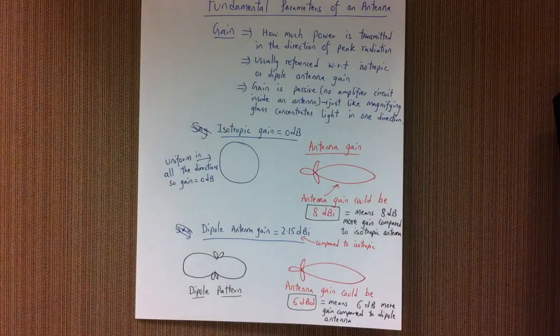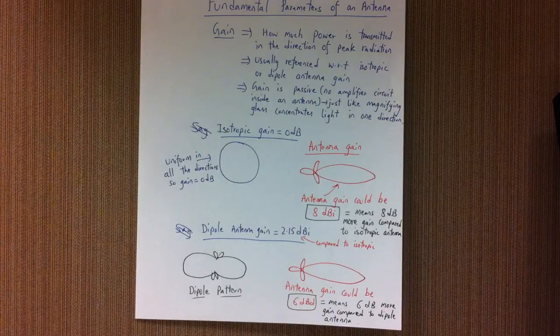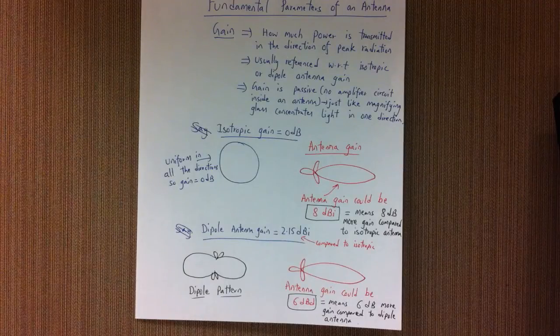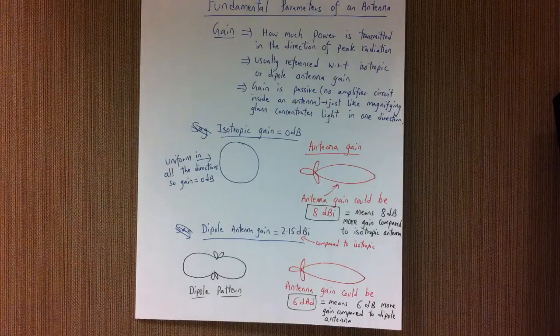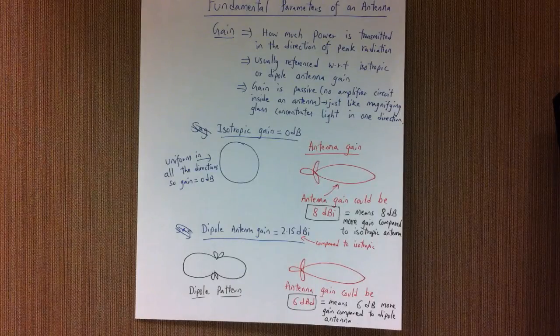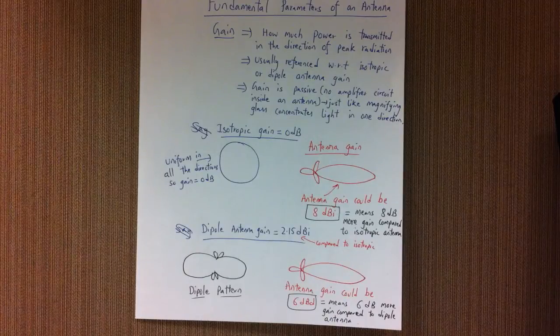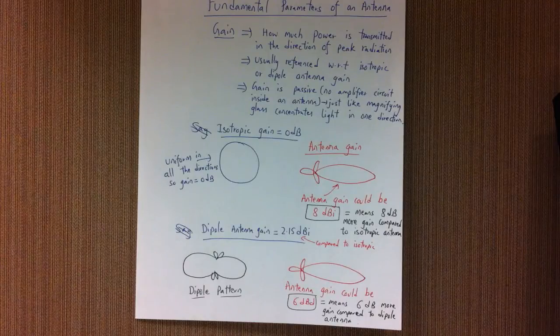Isotropic antenna is basically a hypothetical antenna with a gain of 0 dB. With respect to that isotropic antenna, the antenna gain could be 8 dBi, which means there's 8 dB more gain in a certain direction compared to that isotropic antenna that does not have any direction.